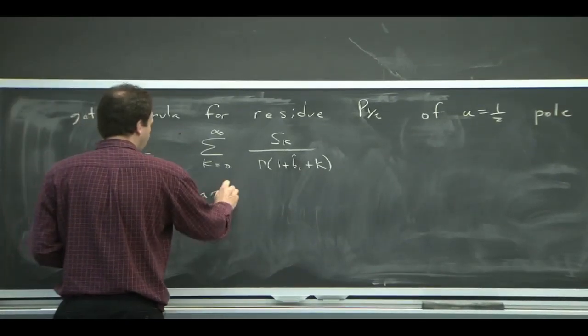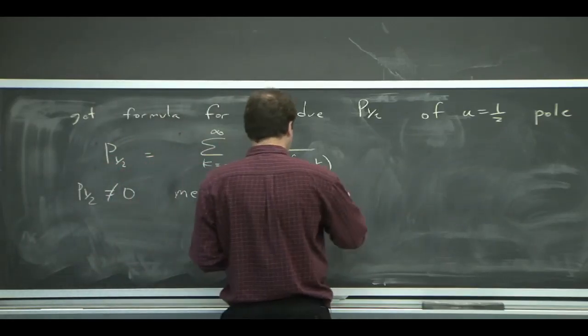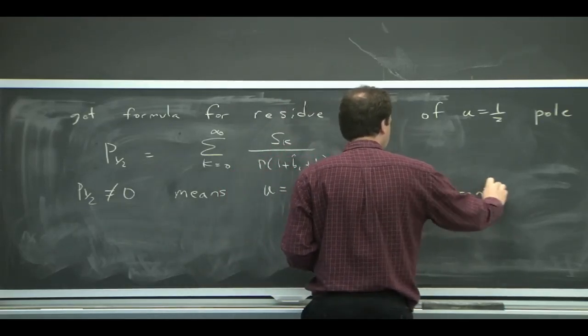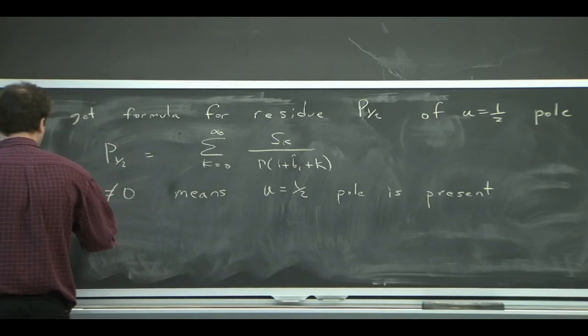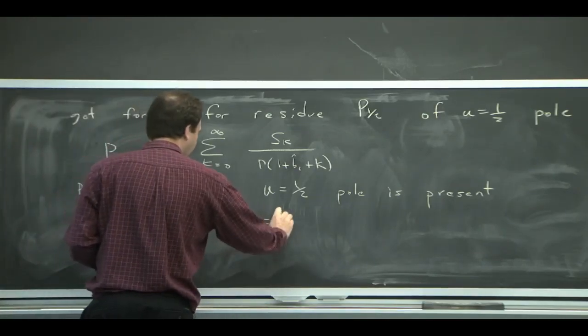then you have a U equals a half pole. And if P 1 half is equal to 0, then you have no U equals a half pole.